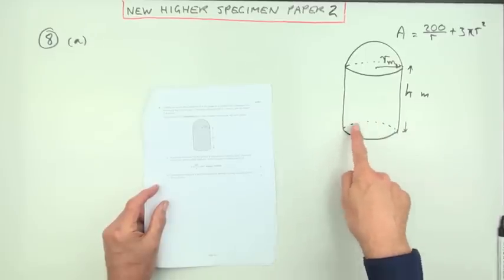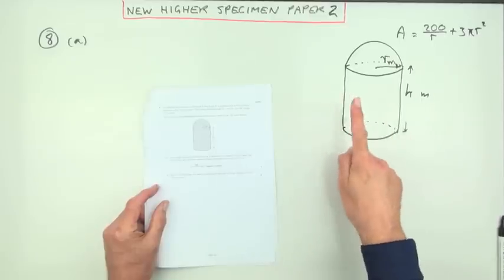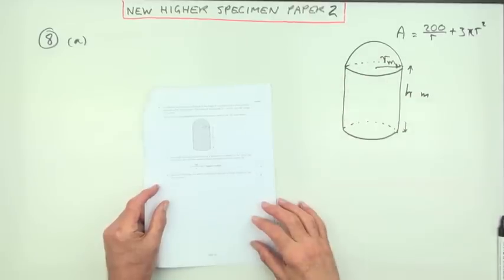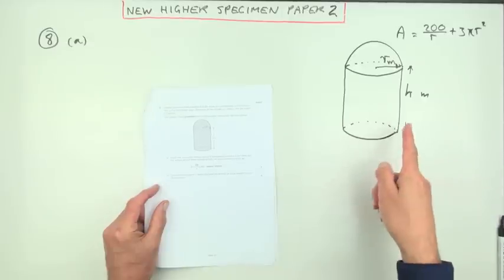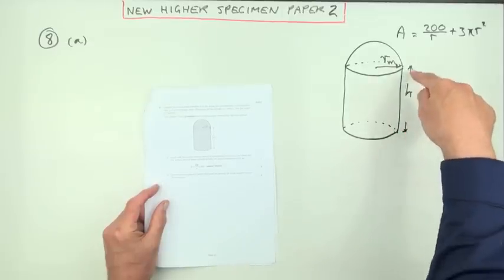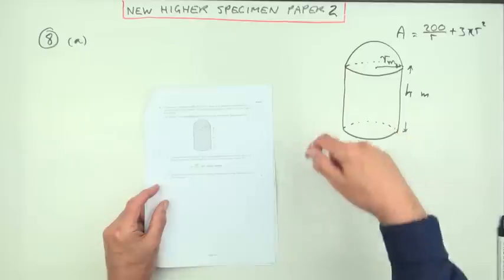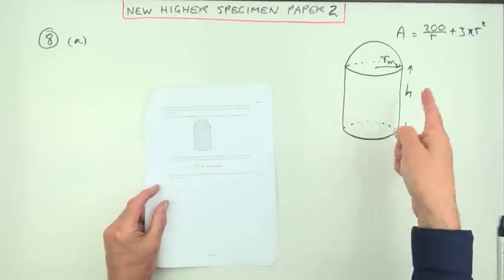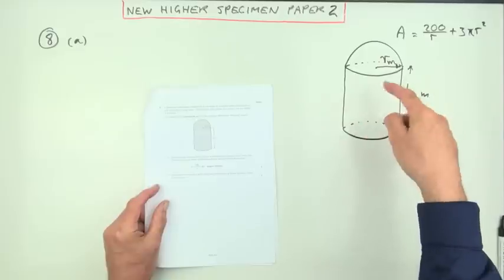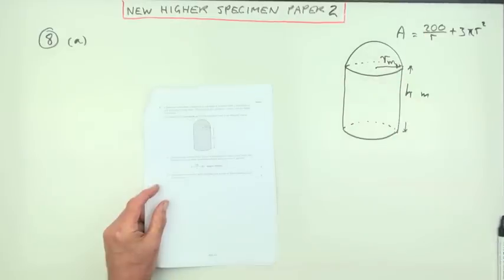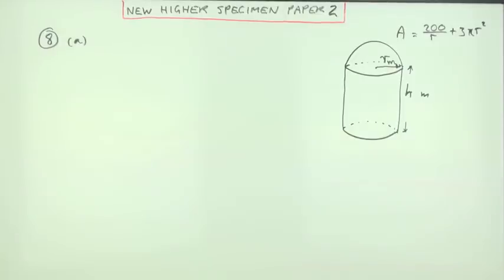Now it refers to this solid shape here, where you have a circular base, curved sides for the cylinder, and a hemispherical top. It gives the dimensions as H for the height of the cylindrical part and R for the radius of this hemisphere. It's just as well they had that radius indicated along the way and not up the way.